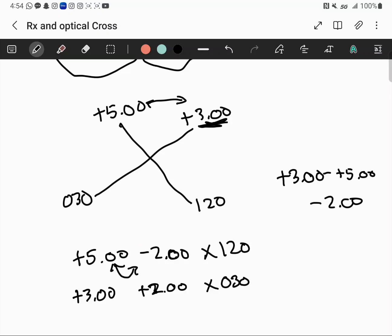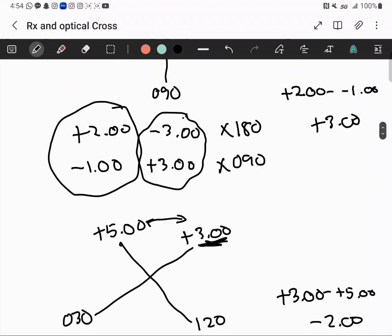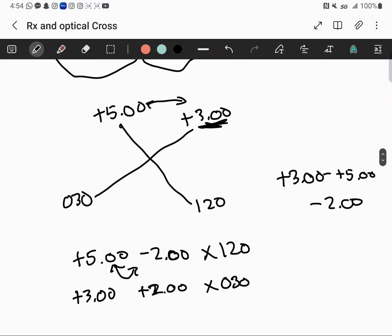They should be very quick and easy to do. For minus cylinder form, pick the most positive, pick that axis, put those on there, take the opposite meridian, subtract the original meridian. You'll get your cylinder, or just know that to get from plus 5 to plus 3, you subtract 2. Either way works.